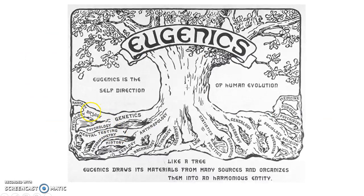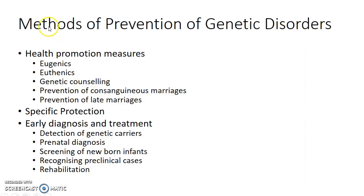Eugenics is the self-direction of human evolution. Now before we go into the details of eugenics, let us see about the methods of prevention of genetic disorders.